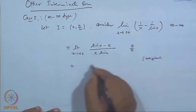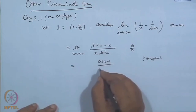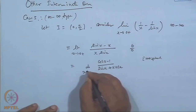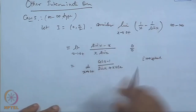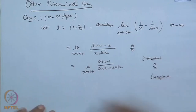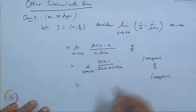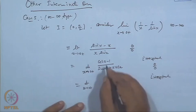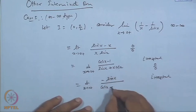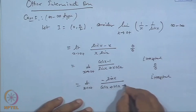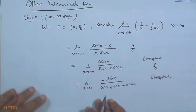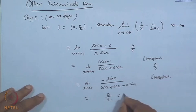Differentiating numerator and denominator: we get [sin(x) + x·cos(x)] / [sin(x) + x·cos(x)] as x→0⁺ — still 0/0. Apply L'Hôpital's rule again. We get [cos(x) − sin(x)] / [cos(x) + cos(x) − x·sin(x)]; taking the limit as x→0 gives 0/2 = 0. So the answer is 0.